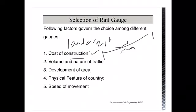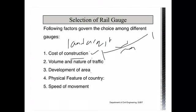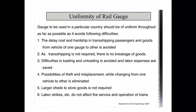Regarding speed of movement — speed and gauge width are proportional to each other. Greater the gauge width, the higher the speed that can be achieved. Lower speed discourages passengers, so it is always preferable to maintain broader gauge to achieve higher speed and attract passengers. These are the key points to keep in mind when selecting a particular type of railway gauge.